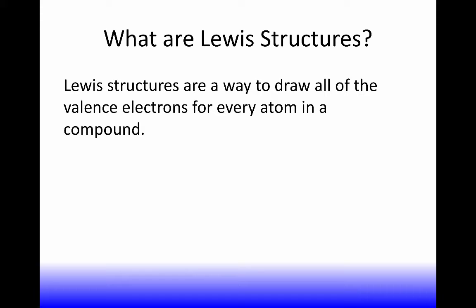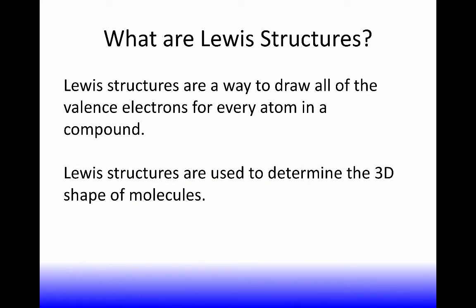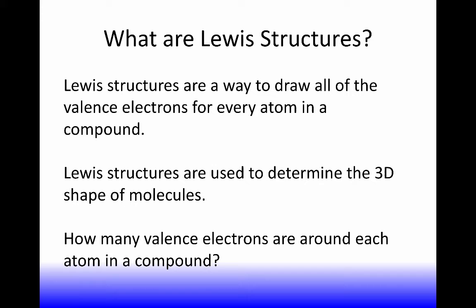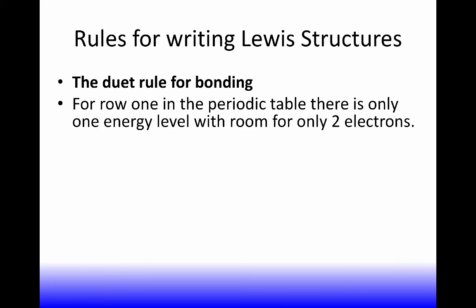Now what are Lewis structures? Lewis structures are a way to draw all of the valence electrons for every atom in a whole compound. They're used to determine 3D shape of molecules, which we'll get to in the last couple of classes next week. How many valence electrons are around each atom in a compound? Well, the duet rule, as I said, is for hydrogen.